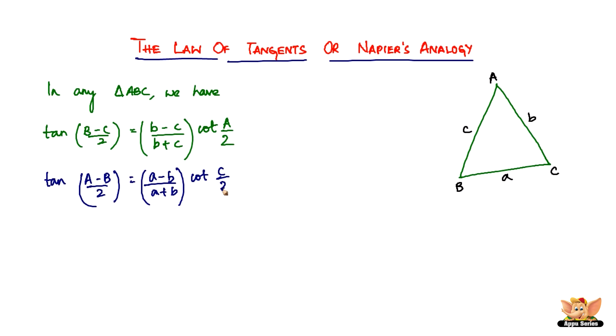And then we've got another one which is tangent of (C-A) divided by 2, which is equal to (c-a)/(c+a) times cotangent of capital B by 2.